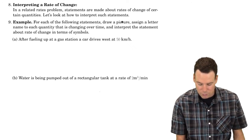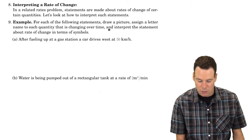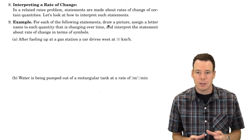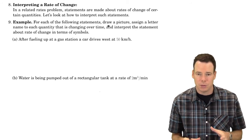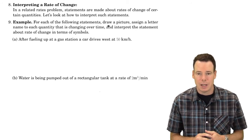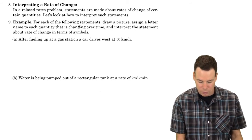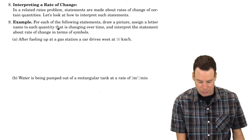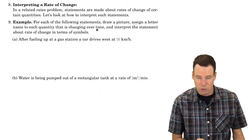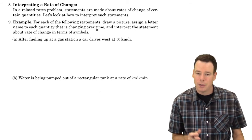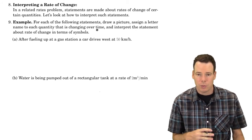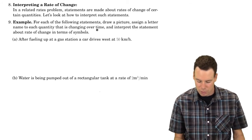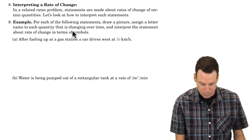The first few steps are ones we covered in the last video — drawing a picture and assigning letter quantities that are changing over time, and then finding a relationship. Here we're focusing on how to interpret the statement about a rate of change.